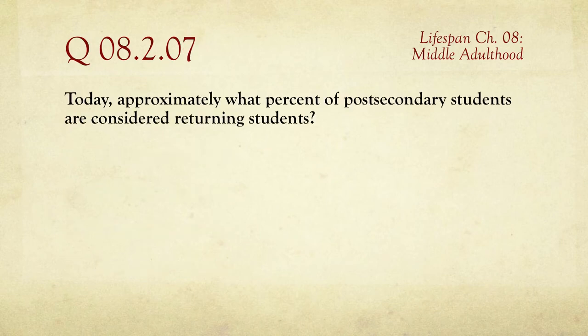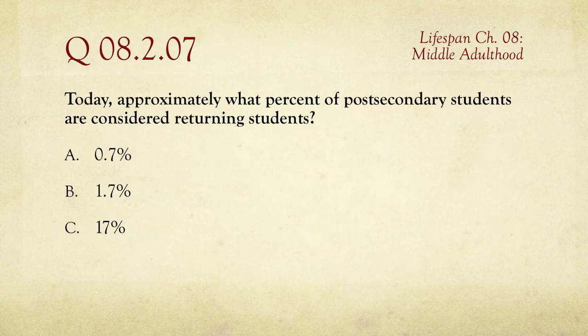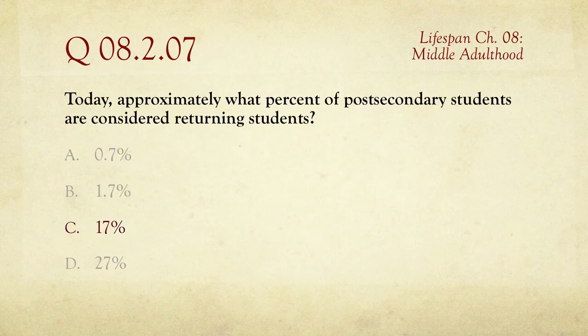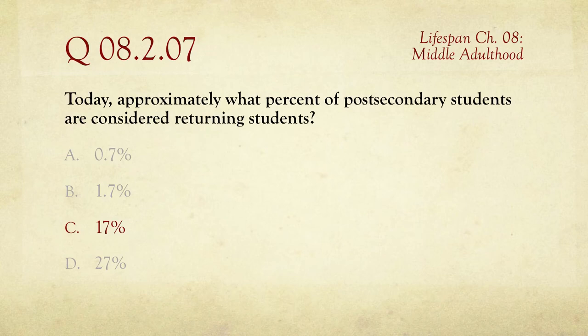Question number seven: approximately what percent of post-secondary students — that means college students — are considered returning students? 0.7%, 1.7%, 17%, or 27%? What percent of college students are grown-ups coming back to school? The answer is 17%, about one in six. It varies tremendously from school to school — at UVU, that percentage might be higher — and the trend also changes over time.